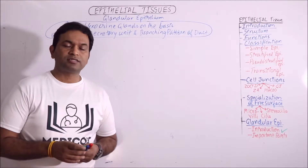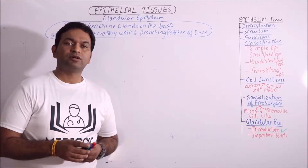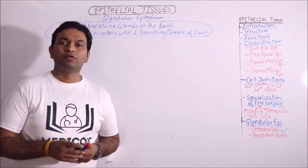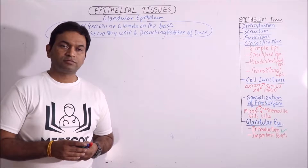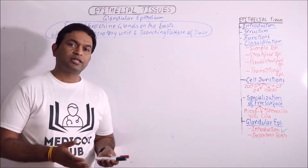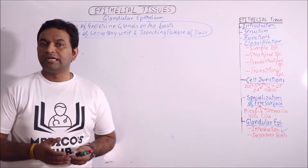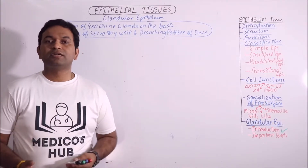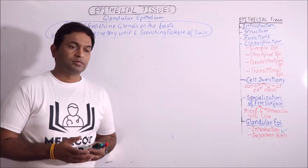Multicellular glands can also be classified on the basis of presence or absence of ducts. If ducts are present, these are exocrine glands. If ducts are absent, these are endocrine glands.